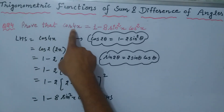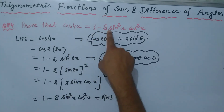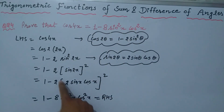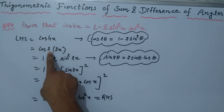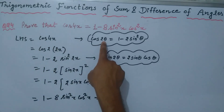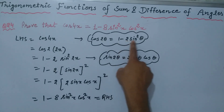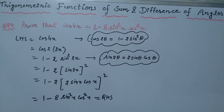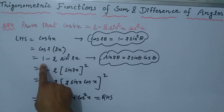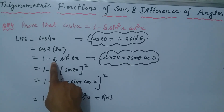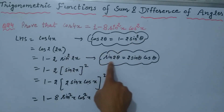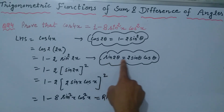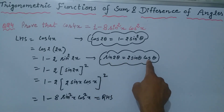To recap question 24: cos 4x = cos(2 × 2x), applying cos 2θ = 1 - 2 sin²θ gives 1 - 2 sin²2x, then applying sin 2θ = 2 sin θ cos θ gives the result 1 - 8 sin²x cos²x.